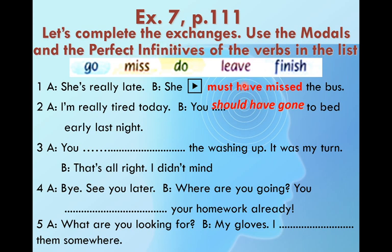The perfect formula repeats everywhere: the auxiliary verb have plus all verbs in the past participle. Past participle is either the third form of the verb or with an -ed ending if it's a regular verb.